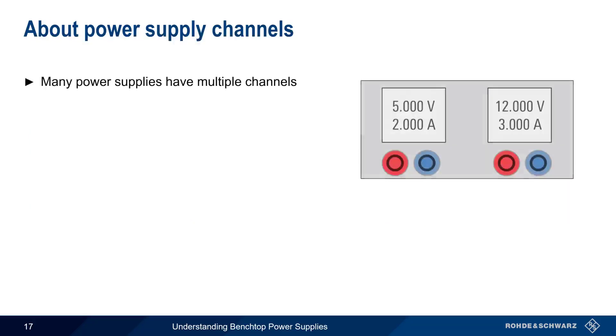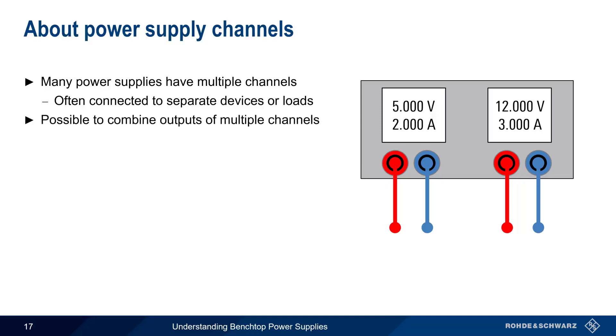Many DC benchtop power supplies have multiple channels, and in most cases, these channels are used independently to provide power to separate devices or loads. That said, it's often possible to combine the outputs of multiple power supply channels. Combining channels can be used to increase the output voltage or current beyond that which can be provided by a single channel.